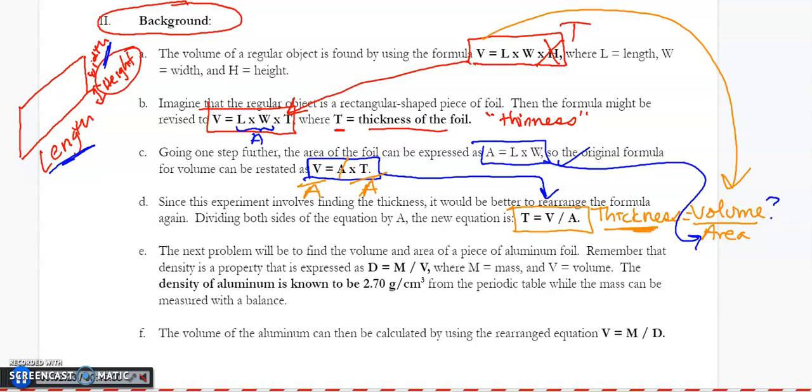Well, since we know that this is aluminum foil, we can look up aluminum on the periodic table. And that periodic table will tell us what its density is.